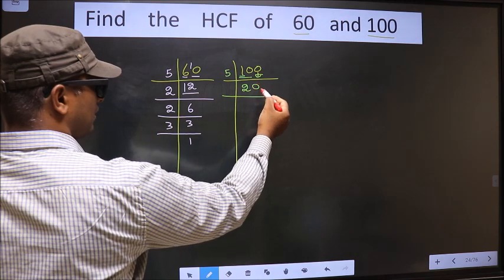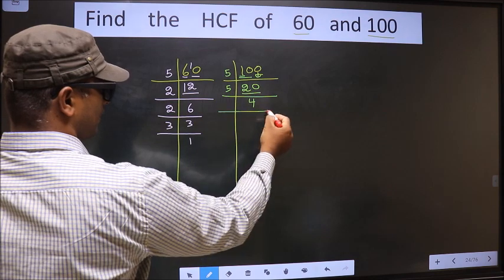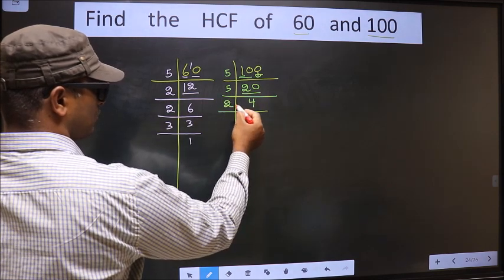Then, this 0 as it is, down. Here we have 20. 20 is 5, 4 is 20. Now, 4 is 2, 2 is 4.